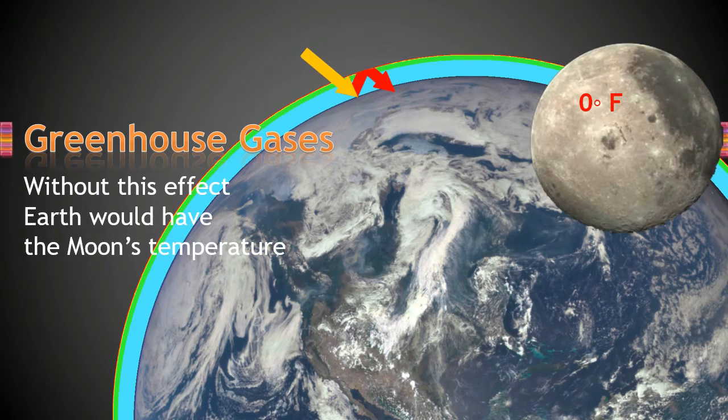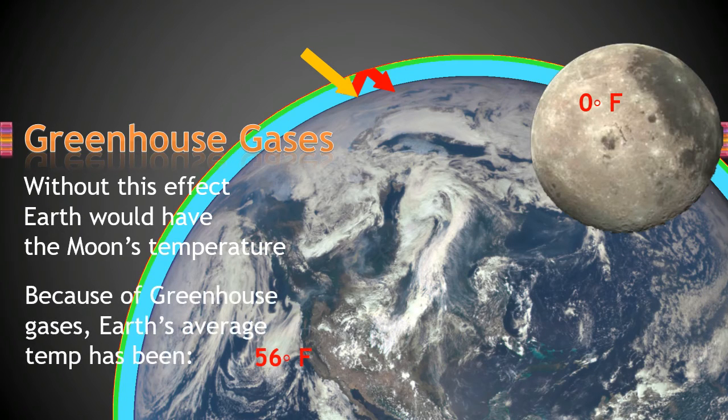Without this greenhouse gas effect, Earth would have the same temperature as the moon's, which is zero degrees Fahrenheit on average. Because of our greenhouse gases, Earth's average temperature has been 56 degrees.